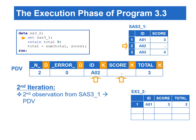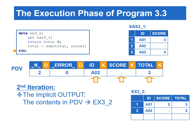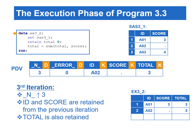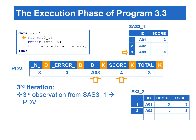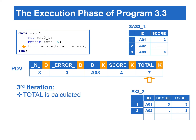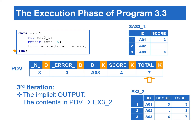Next, the set statement copies the second observation from the input data to the PDV. Total is calculated. The control reaches the end of the second iteration. The implicit output copies the contents from the PDV to the output data. SAS returns to the beginning of the data step to start the third iteration. _N_ is incremented to three. ID and score are retained from the previous iteration because they are from the input data. Total is also retained because of the retain statement. The set statement copies the third observation from the input data to the PDV. Total is calculated, and the implicit output generates the last record for the output data.